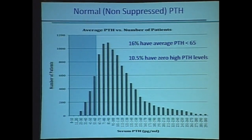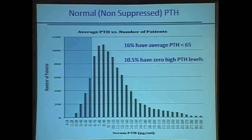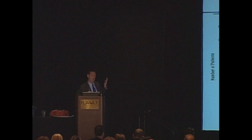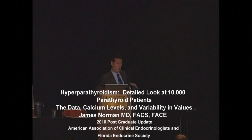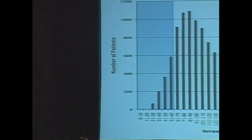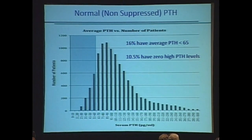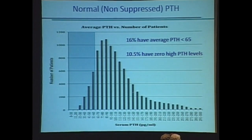This gives a lot of endocrinologists and internal medicine folks trouble because they're trying to make the diagnosis of primary hyperparathyroidism with a patient who's got both high calcium and high parathyroid hormone at the same time. You don't need a high PTH to make the diagnosis of parathyroid disease. What you need is an inappropriate PTH. In fact, over 1,000 of our patients have never had a high PTH.